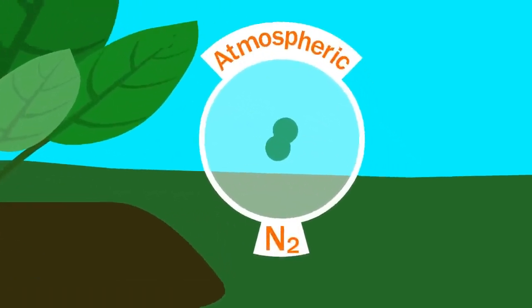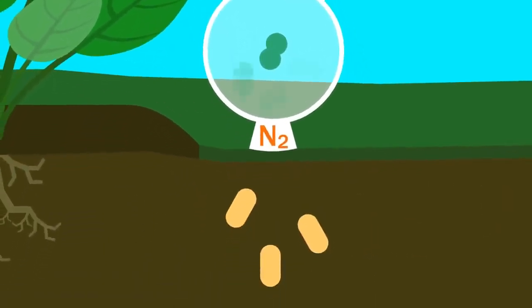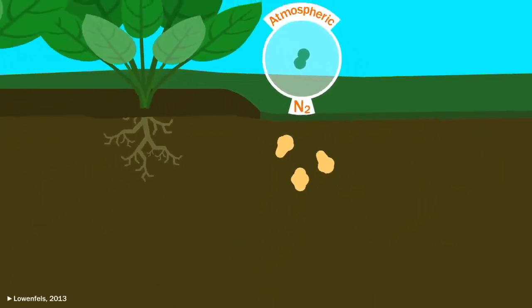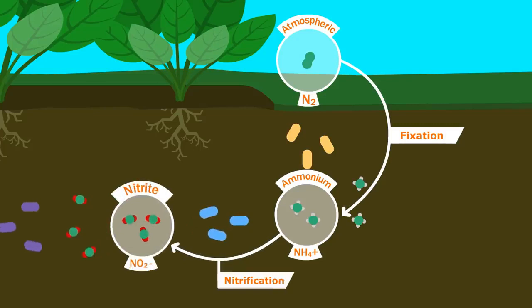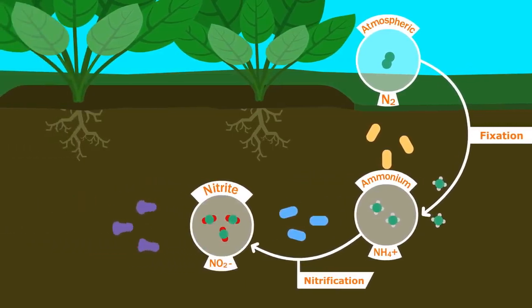For it to become plant available, we need the help of bacteria. Various species of bacteria eat atmospheric nitrogen and poop out ammonium. This gets eaten by other kinds of bacteria, which poop out nitrite, which gets eaten by yet another kind of bacteria, which poops out nitrate.